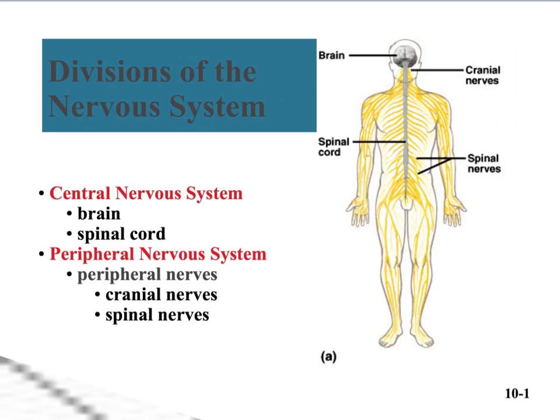There are two divisions of the nervous system. There's the central nervous system, which includes the brain and the spinal cord. And there's the peripheral nervous system, which sends all of those nerves branching from the brain and spinal cord out here in the periphery, down our extremities. Those include the cranial nerves and the spinal nerves.